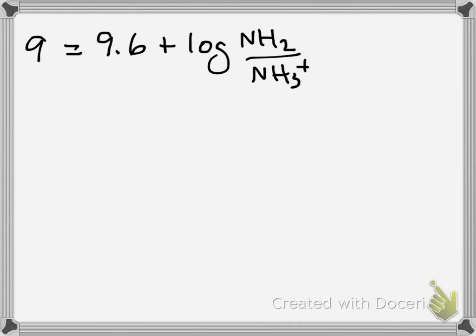You subtract 9.6 from this side, so you get minus 0.6 equals log of NH2 over NH3 plus.